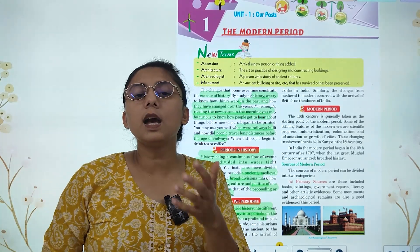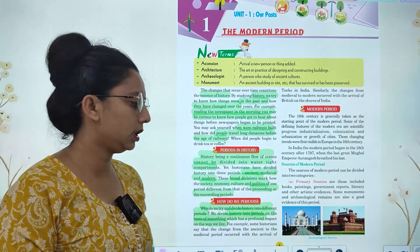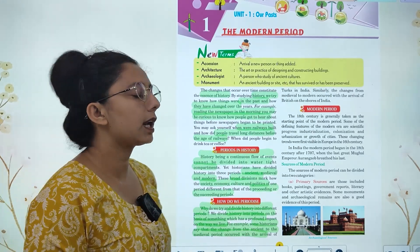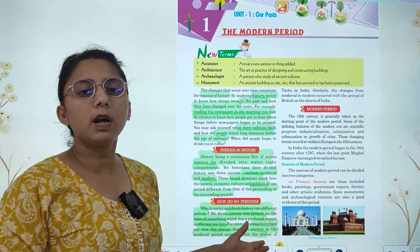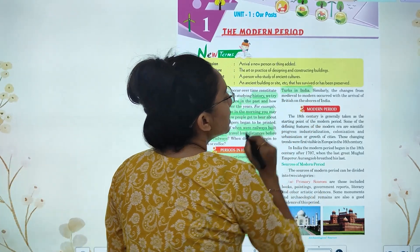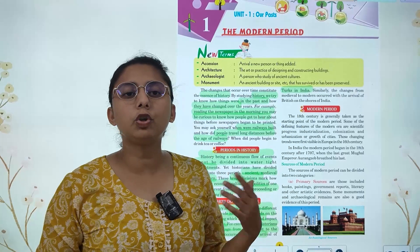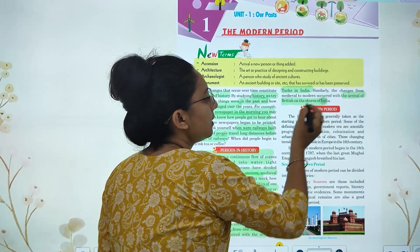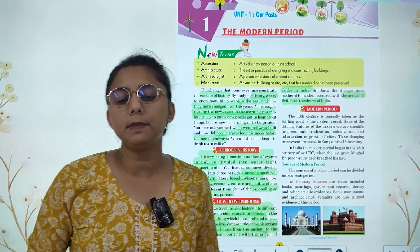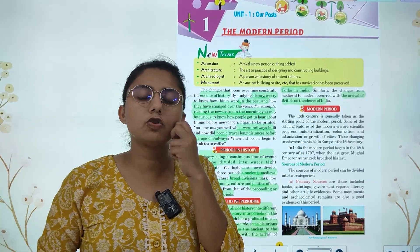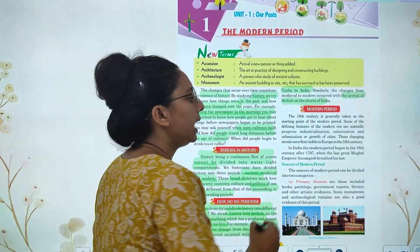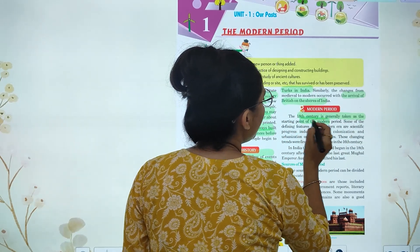For example, some historians say that the change from the ancient to medieval period occurred with the arrival of the Turks, and the change from medieval to modern came with the arrival of the British in India. So what changed from ancient to medieval was the Turks, and what created the change from medieval to modern was the British. The 18th century is generally taken as the starting point of the modern period.